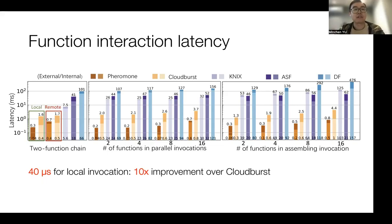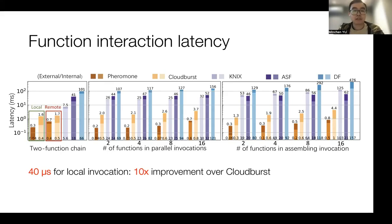The fan-out and fan-in pattern varies the degree from 2 to 16. From the figure, we can see that our system consistently achieves the best performance. In particular, it takes only about 40 microseconds to locally invoke a function. All other experiments incur over one millisecond of overhead, and our overhead is 10 times lower than Cloudburst.